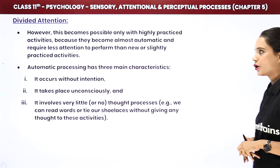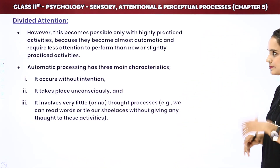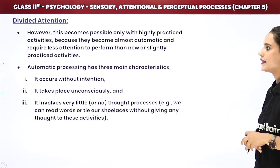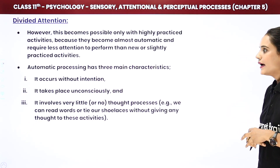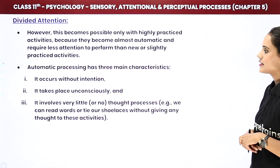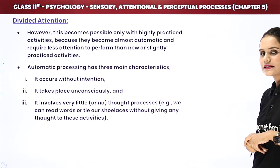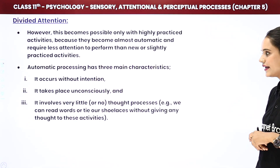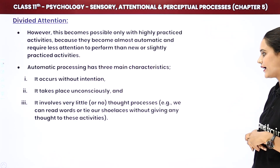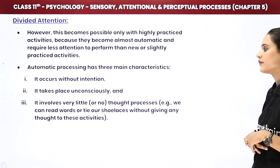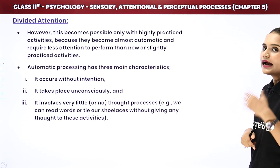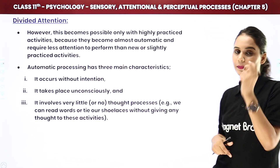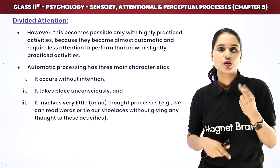This relates to what is called automatic processing. Automatic processing has 3 main characteristics: it occurs without intention, it takes place unconsciously, and it involves very little thought process. For example, we can read words or tie our shoelaces without giving any thought to these activities. This is automatic processing — where you can give attention to one or two things simultaneously.